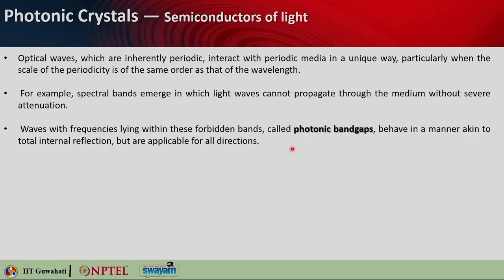We can call frequencies lying in that forbidden band the photonic band gap. They behave similarly to total internal reflection — there is no transmission, everything gets reflected back. But total internal reflection happens at a certain angle, whereas with the photonic band gap, over those frequency bands or wavelength bands, light incident on the crystal from any direction will have the same effect — it is not permitted to enter the material at all. So there will be no transmission through that material, only reflection. That is the concept of photonic band gap.